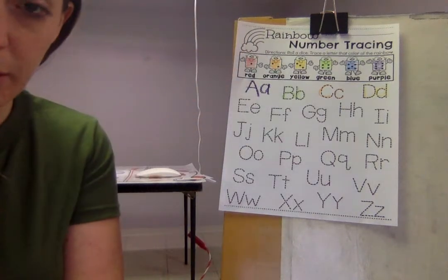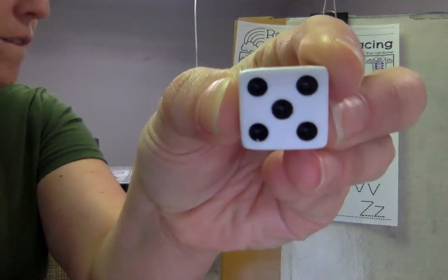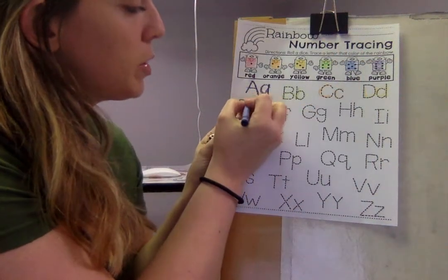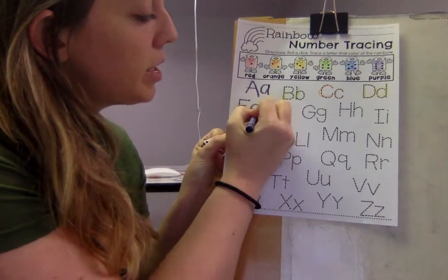All right I'm gonna roll again. This time I got a five. Five was the color blue. So I'm gonna go to my E, capital letter E, and lowercase e.